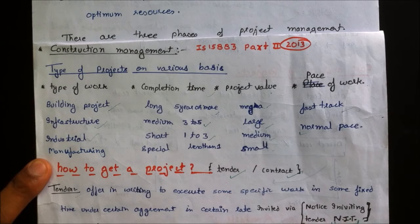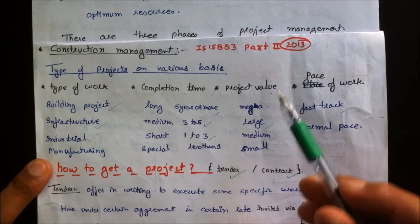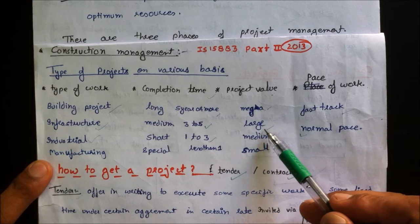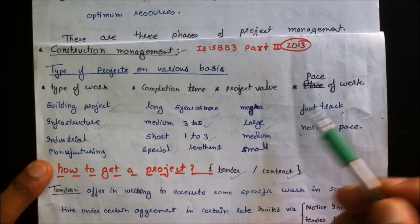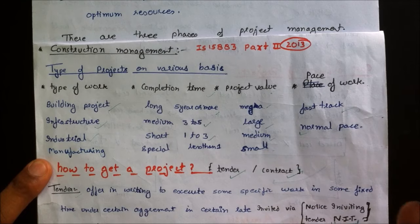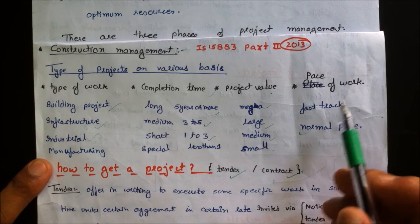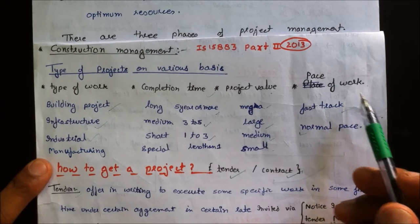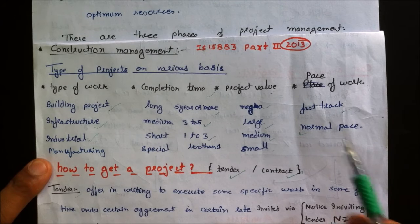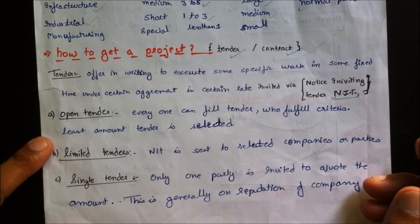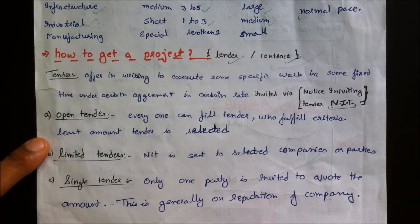Completion time may be long, medium-long, short, or special — less than one year. Project value ranges from mega projects worth thousands of crores, large projects of about a thousand crores, medium projects from 500 to 1000 crores, and small projects of least value. The pace of work may be fast-track, such as in border security forces, or normal pace, such as building a bridge or dam.